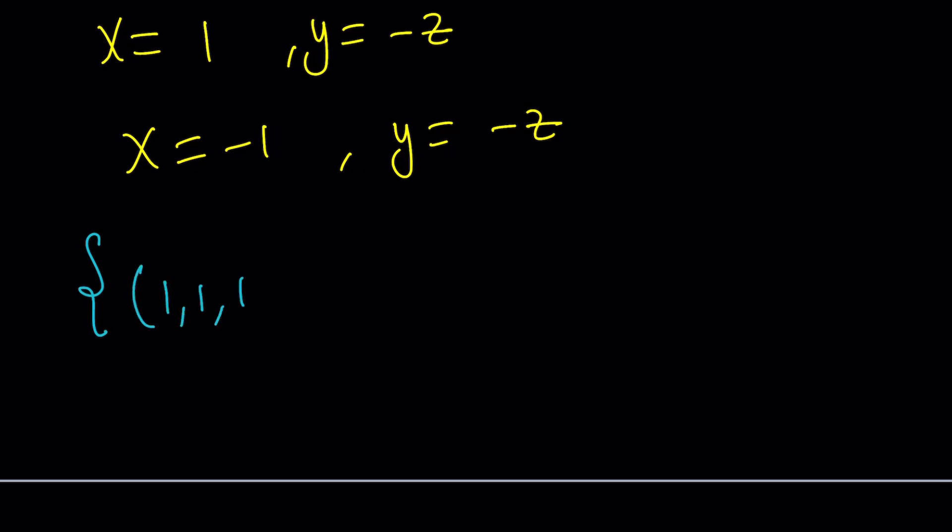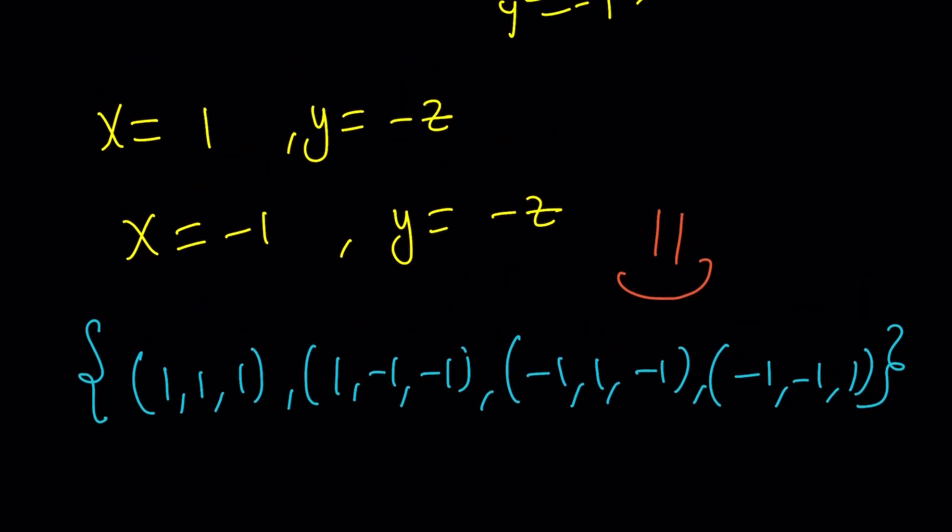Let me summarize all the solutions. We get 1, 1, 1 as a solution. 1, negative 1, negative 1. And then we get negative 1, 1 and negative 1. And finally, we get negative 1, negative 1 and 1. So there are four ordered triples that are solutions. And this brings us to the end of this video. Thank you for watching. I hope you enjoyed it. Please let me know. Don't forget to comment, like and subscribe. I'll see you next time with another video. Until then, be safe. Take care and bye-bye.